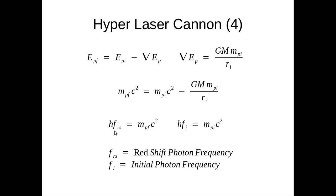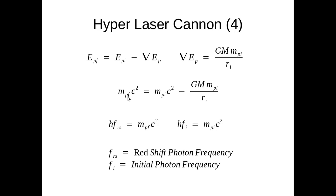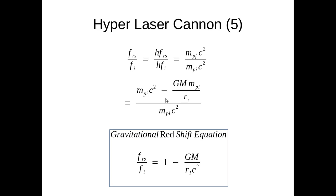What do we get? frs over fi equals hfrs over hfi, which is mpf c squared over mpi c squared. As we remember, mpf c squared is equal to this. Plug it into here, we get this, and we do some math and we end up with the gravitational redshift equation which is commonly used in physics today.